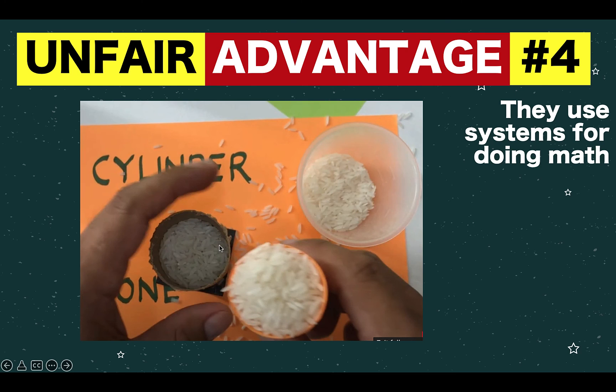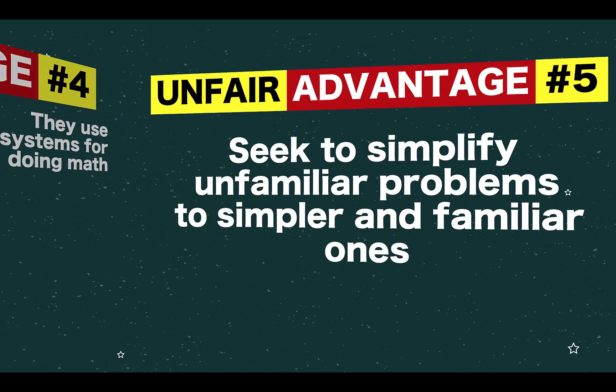Or you can even use whatever objects are near you to model mathematics. And here, I use rice in order to demonstrate the relationship between the volume of a cylinder and the cone of the same base area. Now, let's proceed to idea number five.